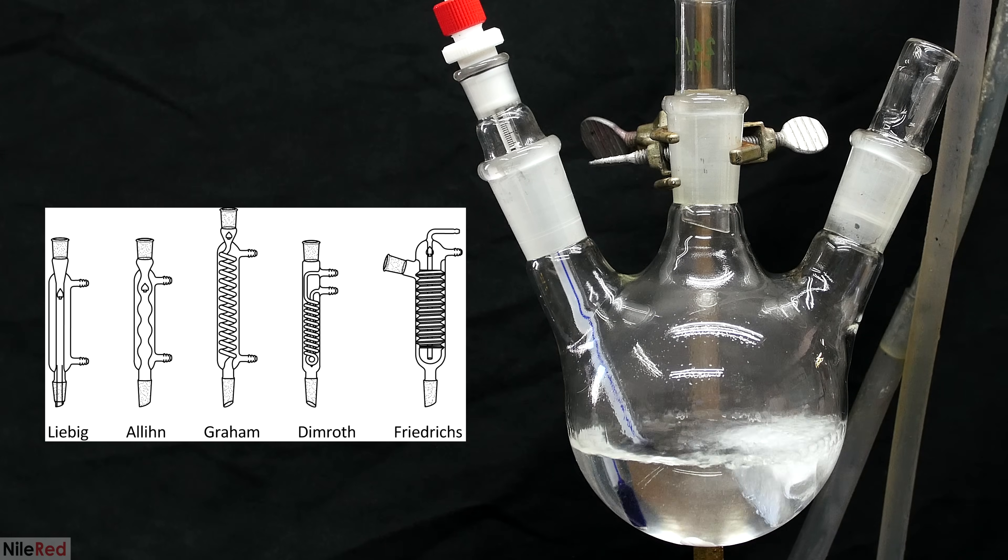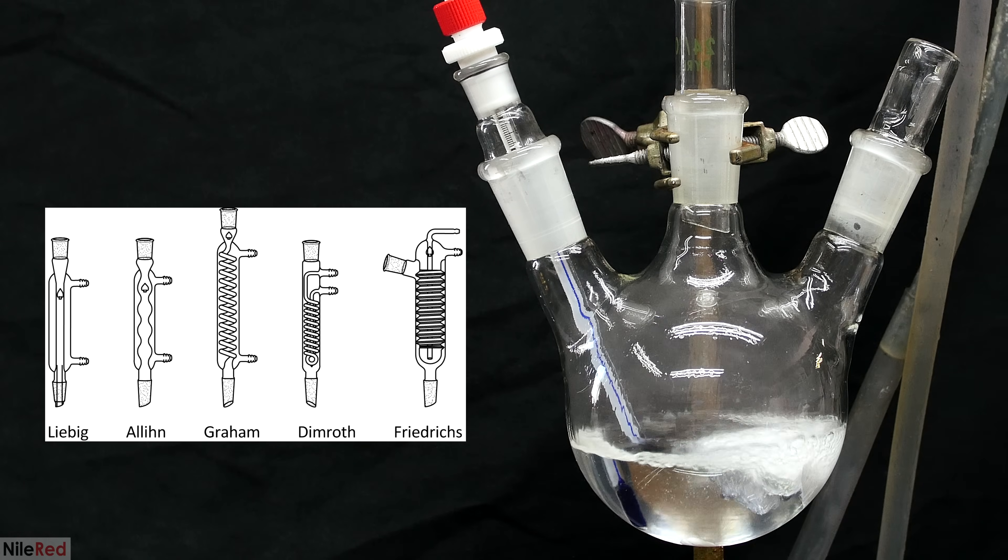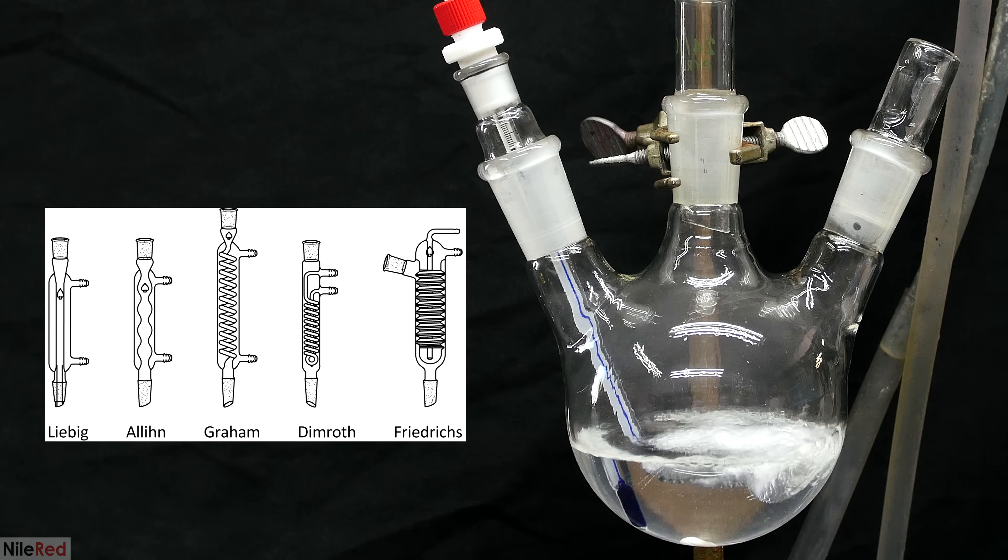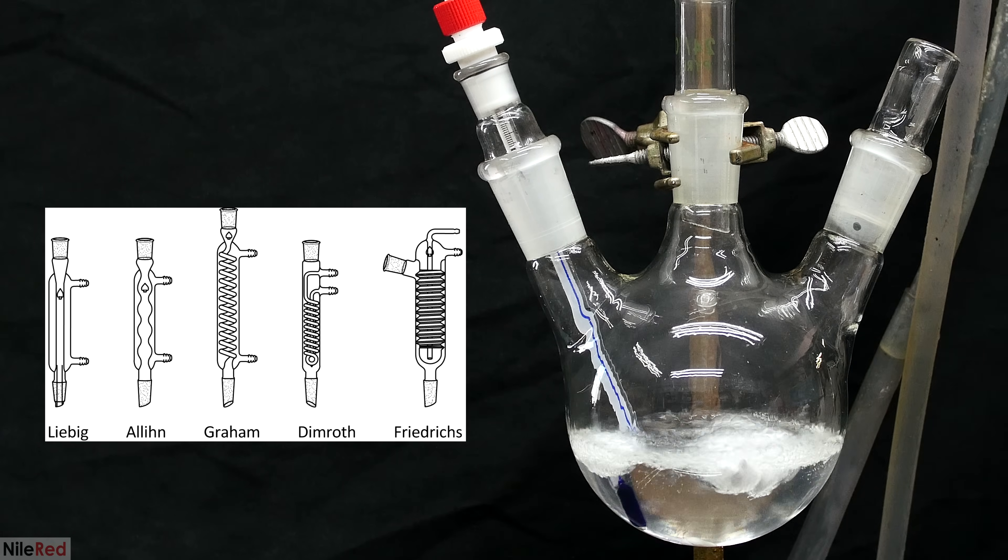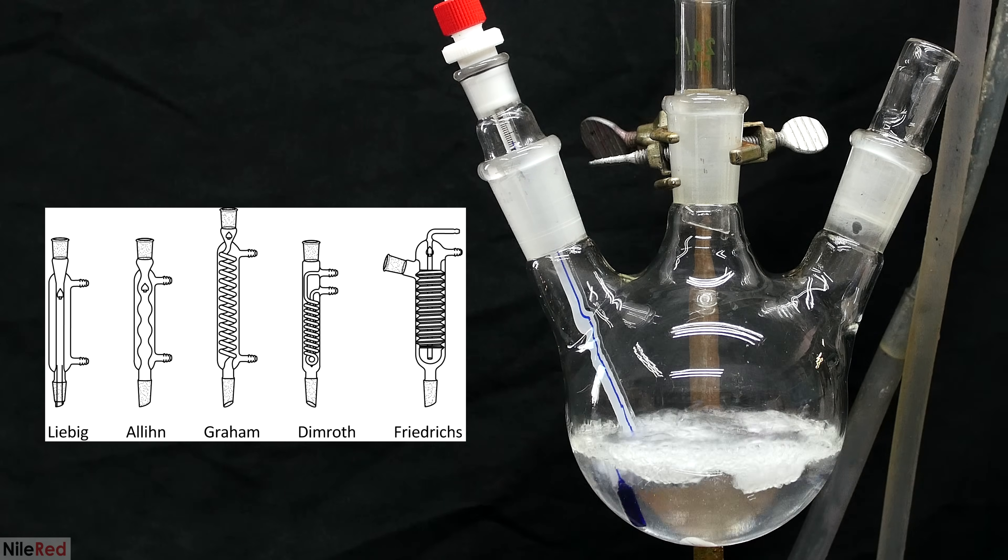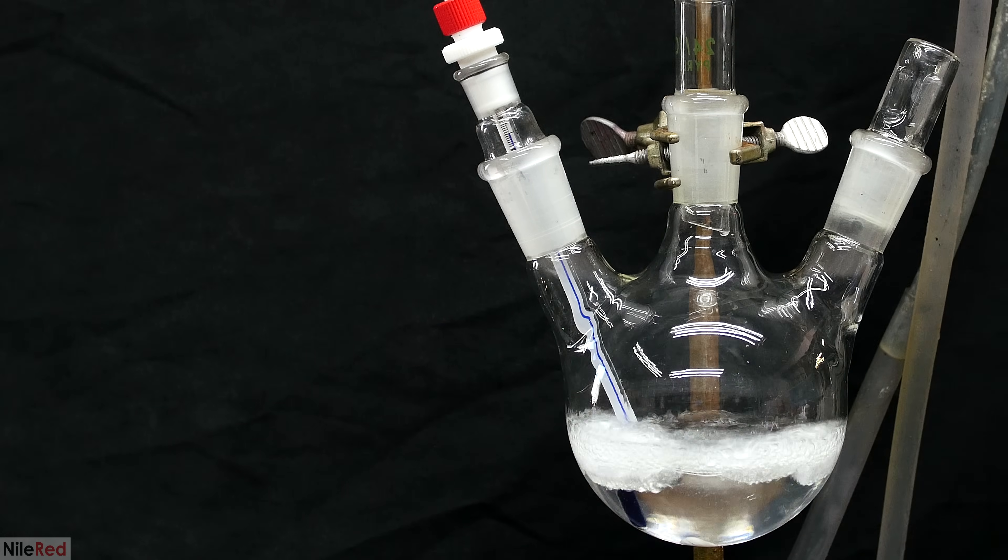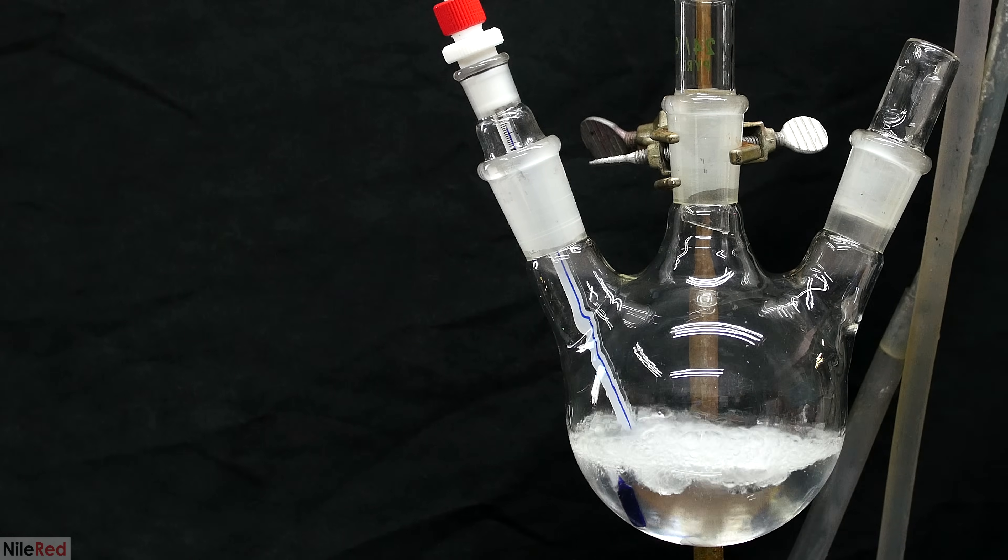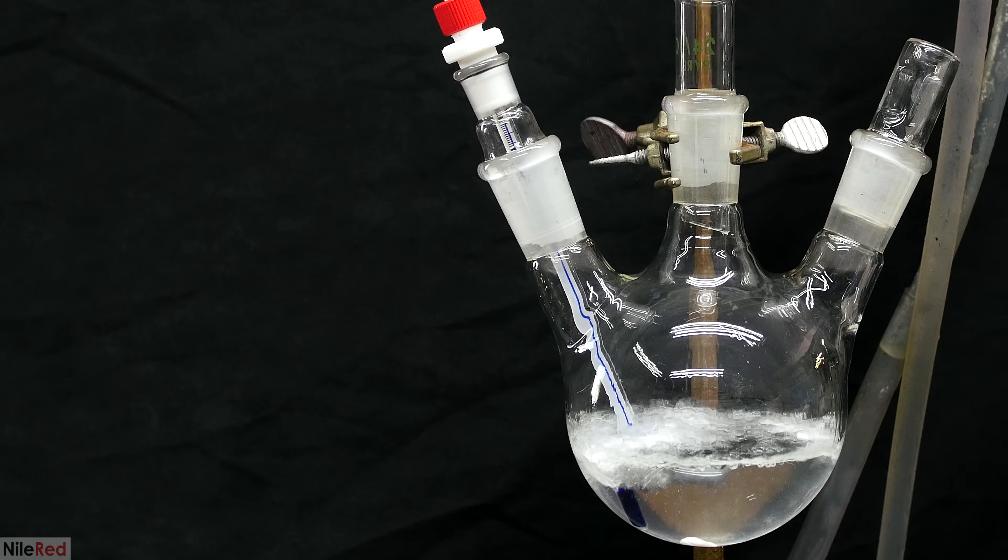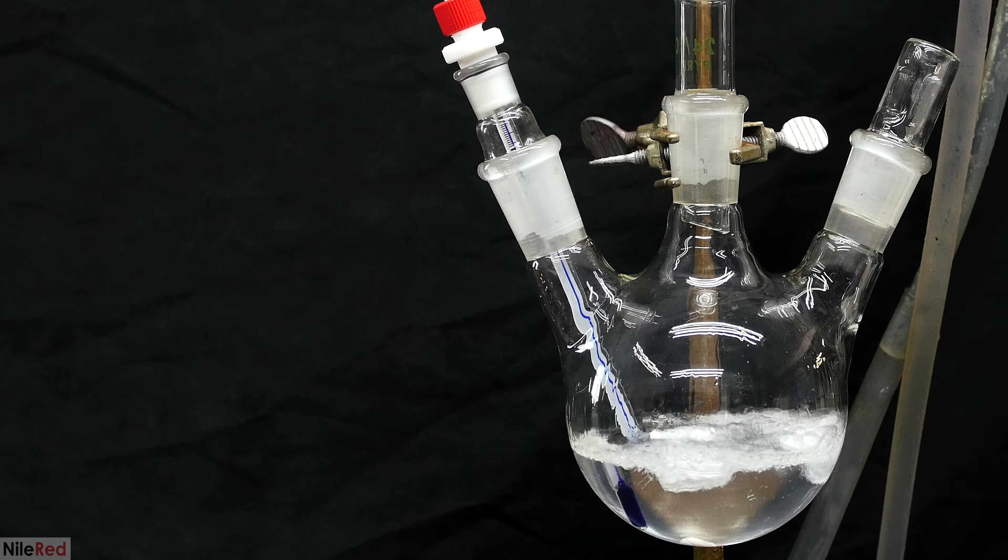This means that you should absolutely not use a Liebig or a Graham, and you really need to use something like a Dimroth or a Friedrich-style condenser. On top of this, the water in the condenser should be ice cold, and you shouldn't use tap water or room temperature water. I didn't film it, but just for you guys, I tried to see if I could get away using a Liebig with ice cold water. The answer that I got was kind of, because I mean it works, as long as you don't mind methanol splashing everywhere and flying out the top of your condenser.